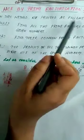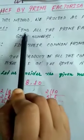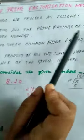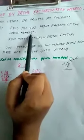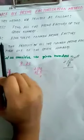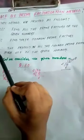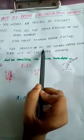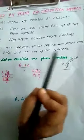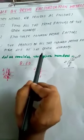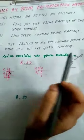In this method we proceed as follows. There are some steps. Step 1: find all the prime factors of the given numbers. Step 2: find the common prime factors. Step 3: the product of all the common prime factors is the HCF of the given numbers. So we have to find the product of all common prime factors.